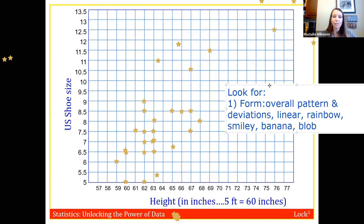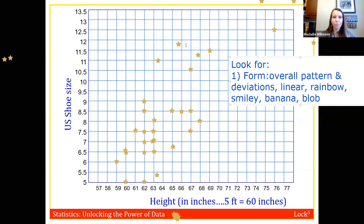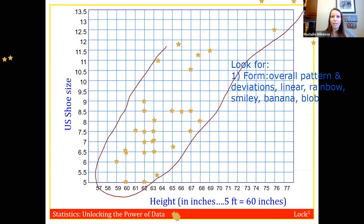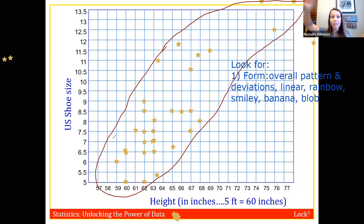One way to tell if a relationship is linear is the fat hot dog test: draw a line around the basic pattern of the points. If it looks like a fat hot dog, the relationship is linear. If the points look more like a blob, it's not linear.